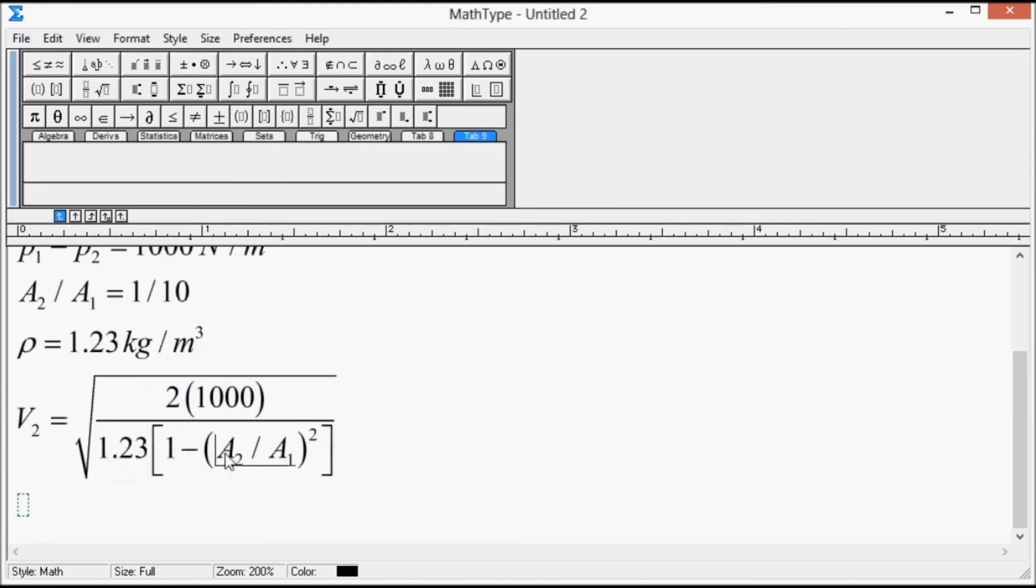Density is 1.23 and area is 1 divided by 10 square. Upon calculating this we get V2 is equal to 40.5 meter per second.